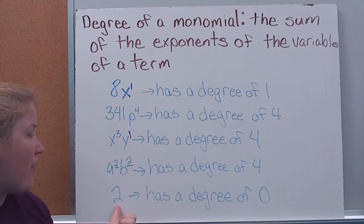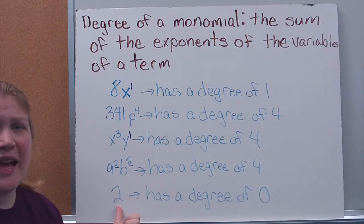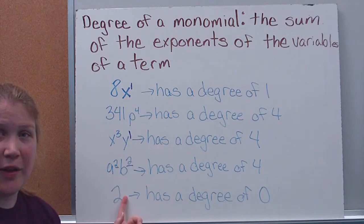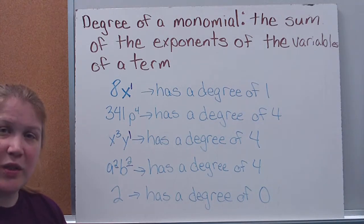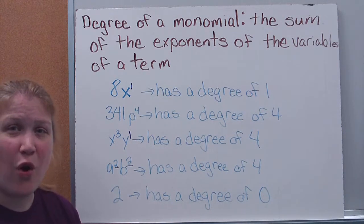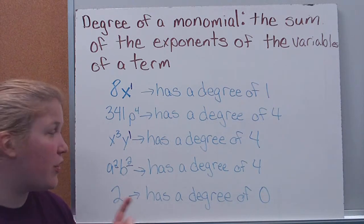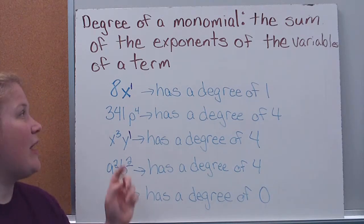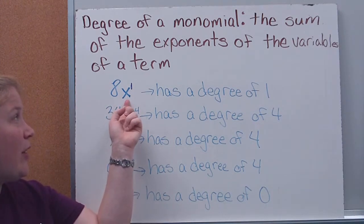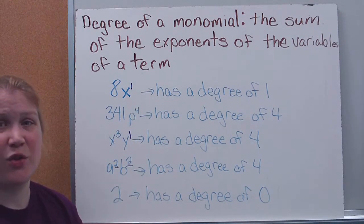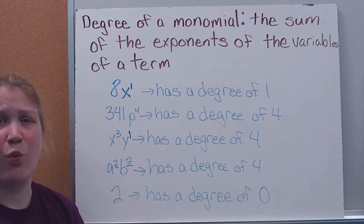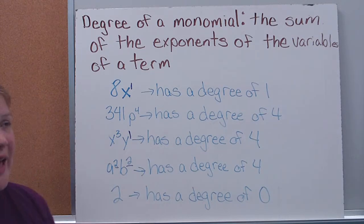Here I have the number 2. This has a degree of 0 because there is no variable. That's the only time you have a degree of 0 — if there's no variable, the degree is 0. If there's a variable and there's no number, that means there's a degree of 1. There's always an implied 1 there — don't forget that.